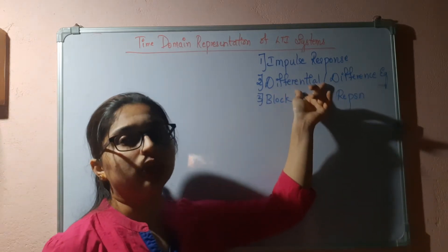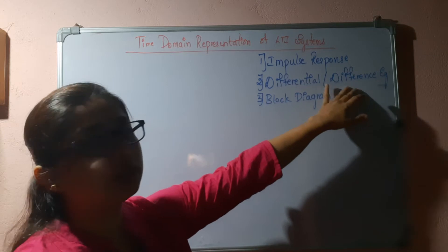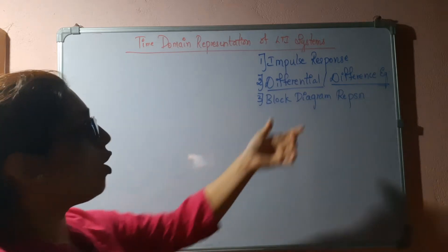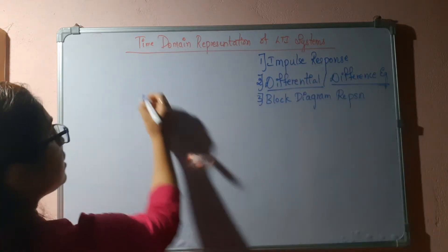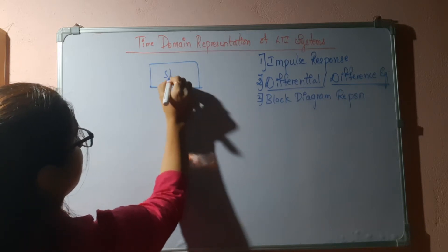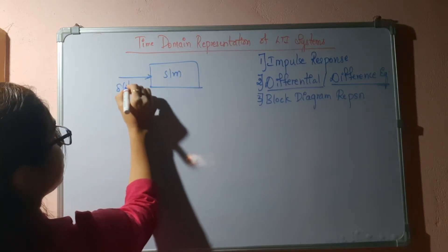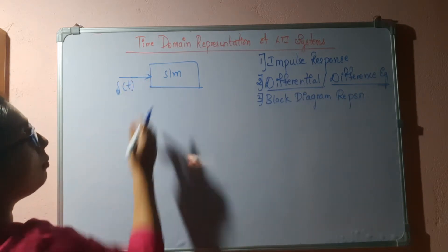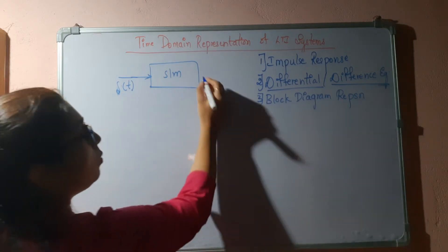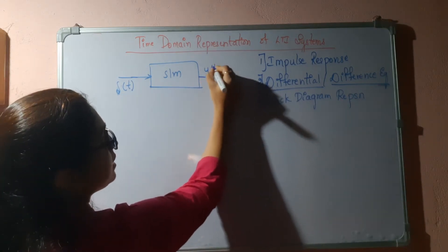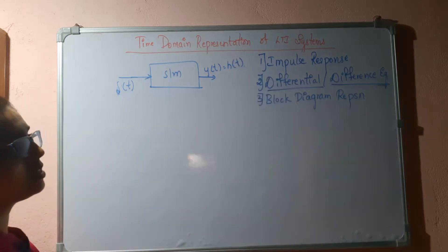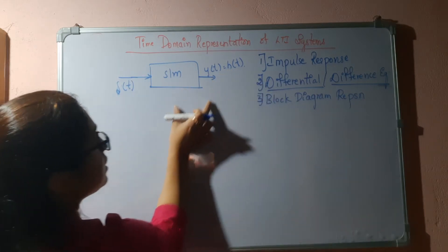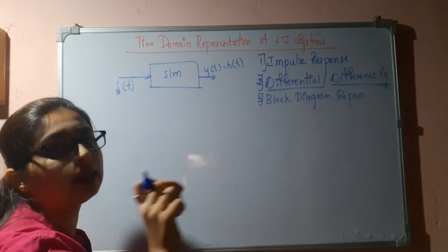The differential equation applies to the continuous time signal, and the difference equation applies to the discrete time signal. What is the impulse response? Suppose this is a system and I am applying the unit impulse as the input. The operation is performed on this unit impulse, and the output obtained is nothing but the impulse response H(t) — that is the response of the system when the unit impulse signal is applied.